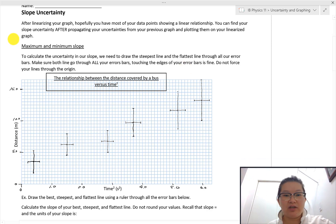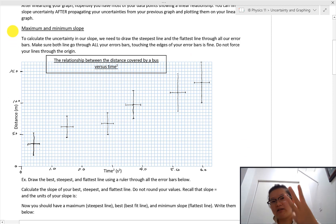So to find the slope uncertainty, you need three slopes. You're like, three slopes? What? You need three lines. Of course, you need the best fit line.